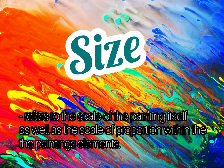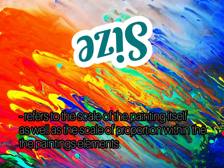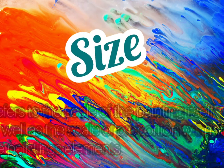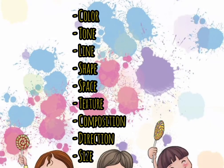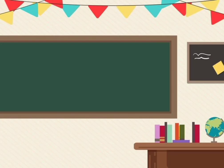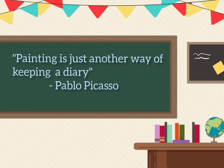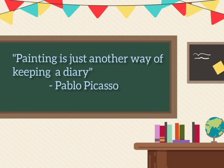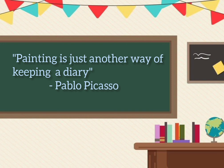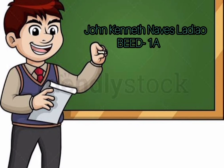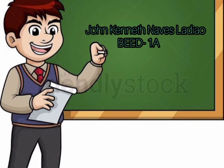Let's have a short recap. The nine elements of painting are: color, tone, line, shape, space, texture, composition, direction and size. Before I end my report, I want to leave a quote about painting by Pablo Picasso: 'Painting is just another way of keeping a diary.' I am Jean-Canet Navis-Lajau, PN1. Thank you.